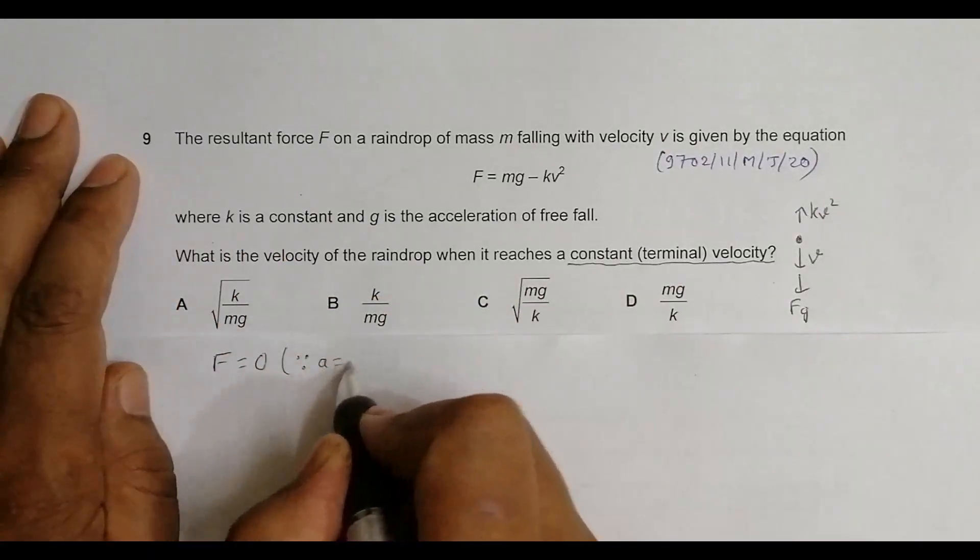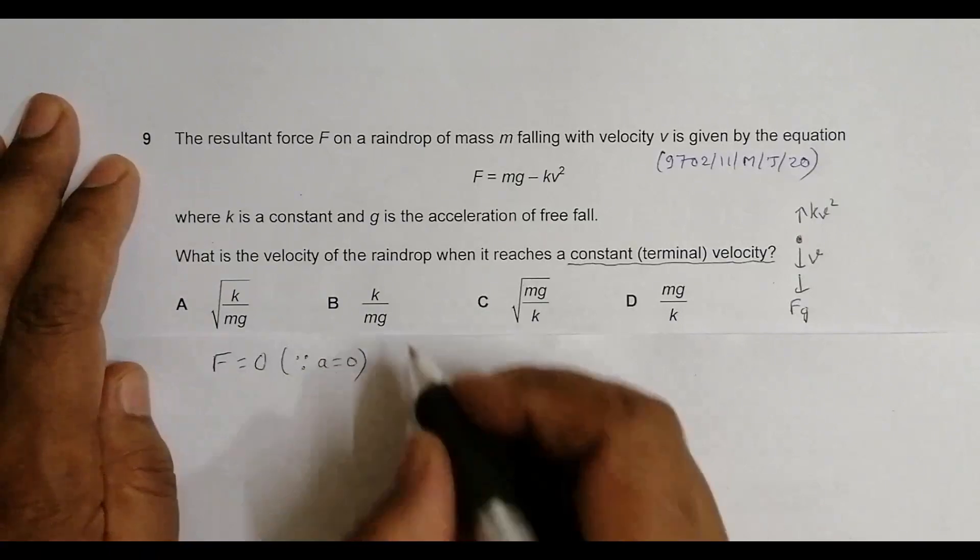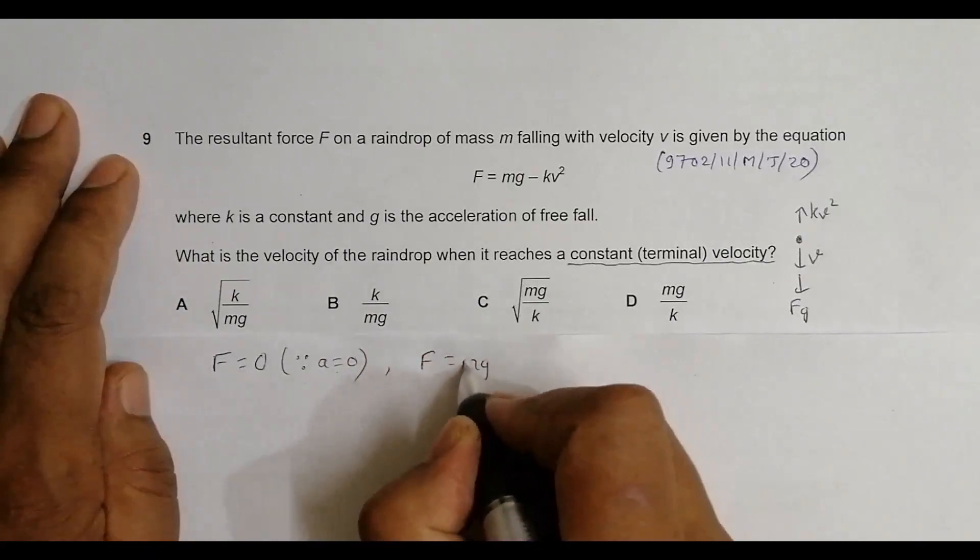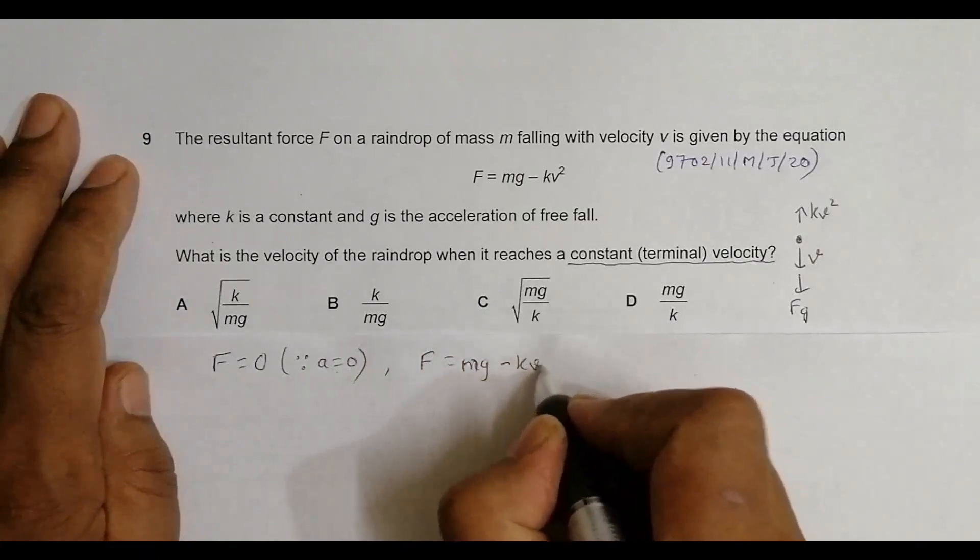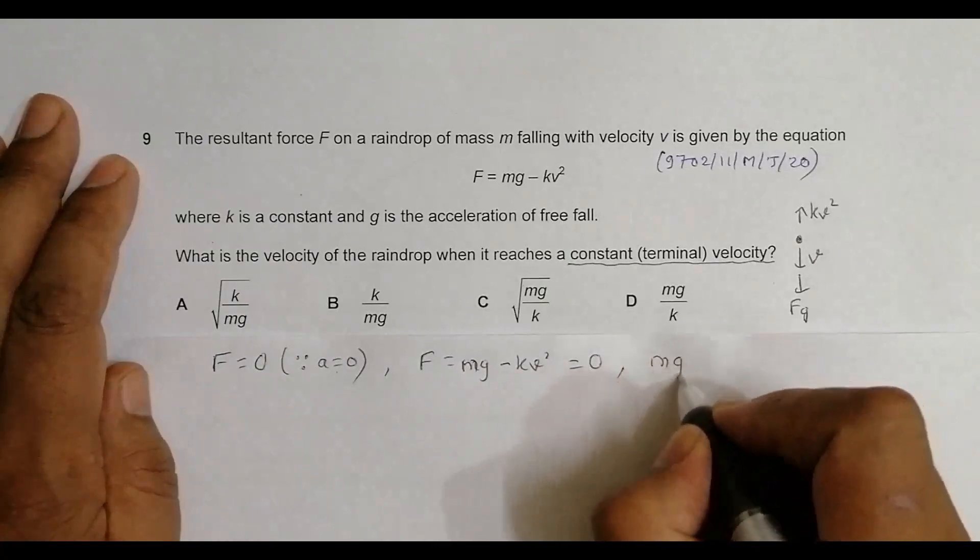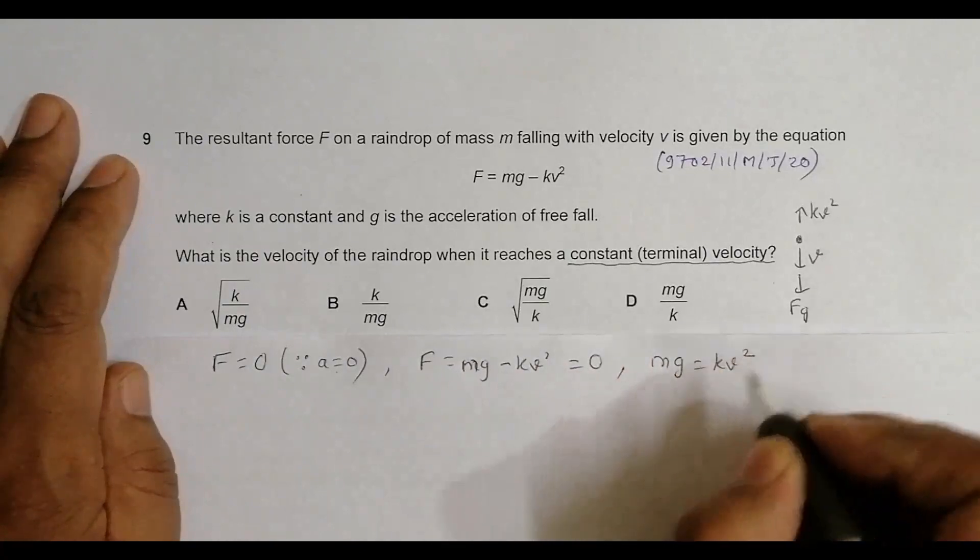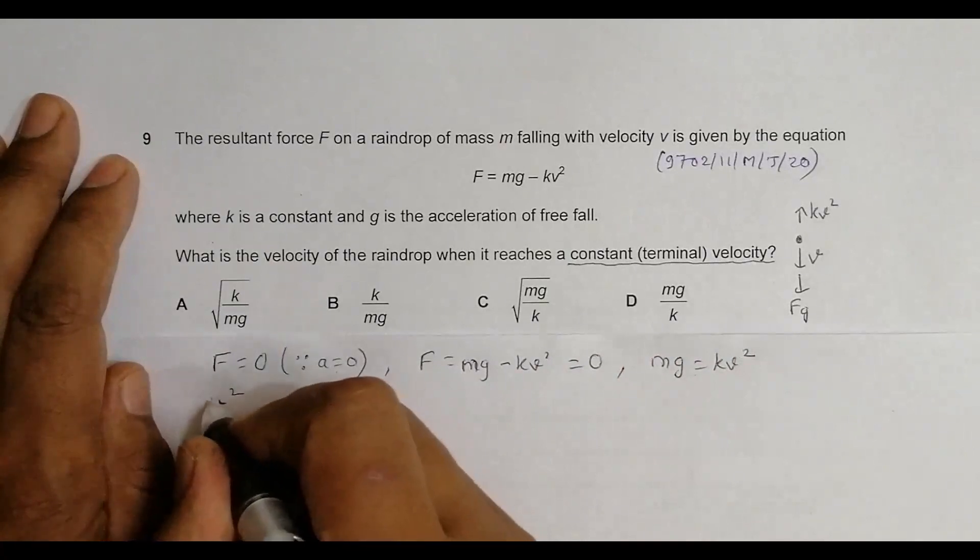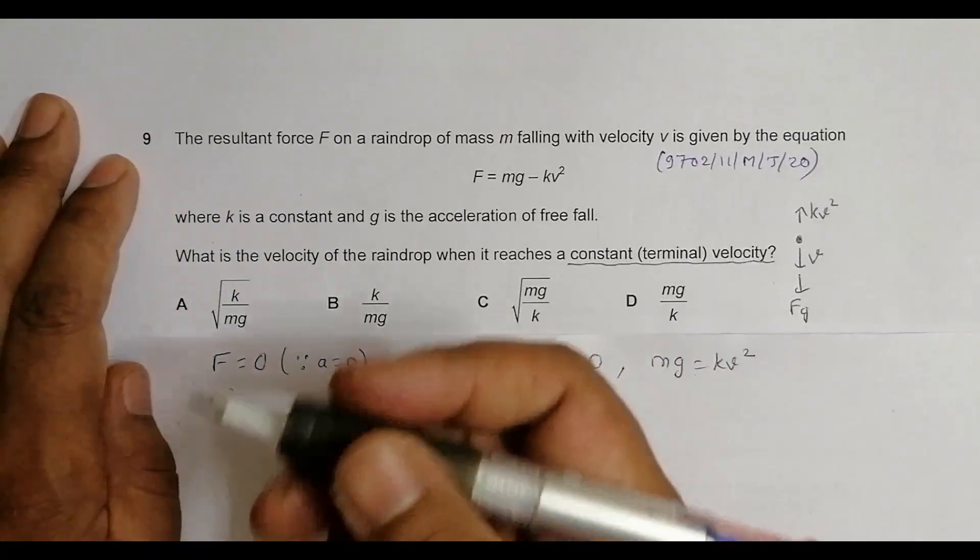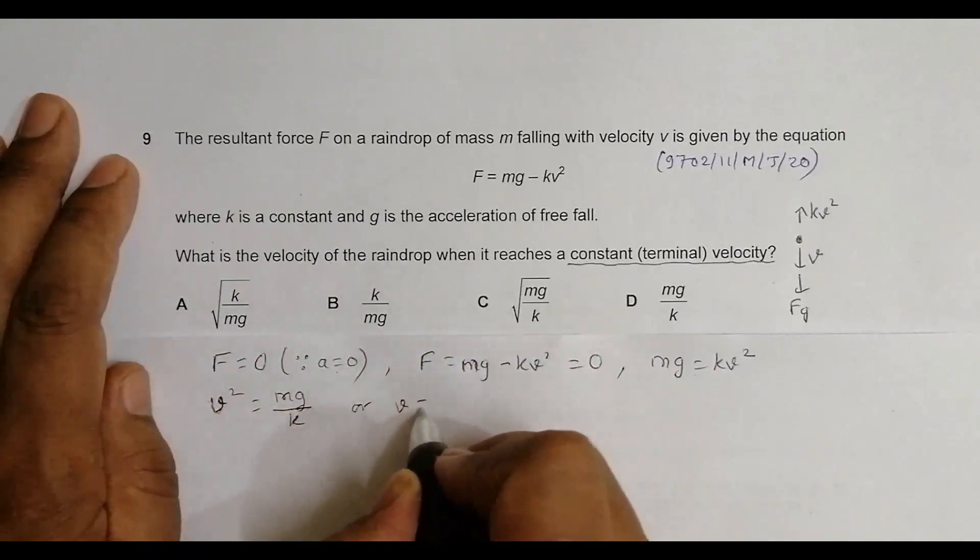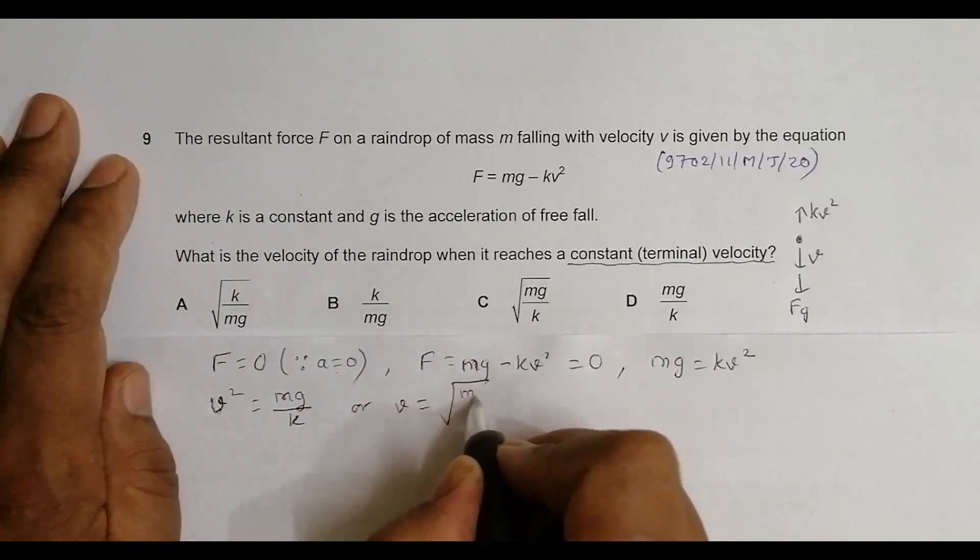At terminal velocity or constant velocity, acceleration equals 0, so F equals 0. Because acceleration equals 0, this means that we have F equals mg minus kv squared, which gives us v squared is equal to mg by k, and gives us v equals root mg divided by k.